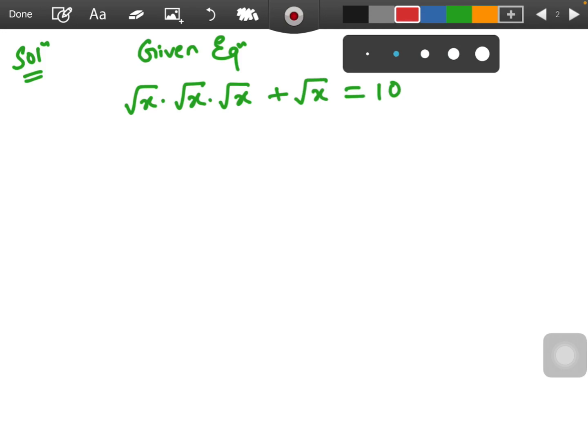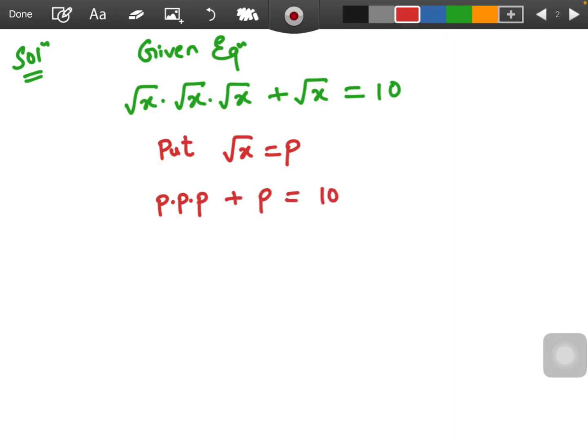Now what we are doing is suppose we are putting that put root x equals to p. You can take any alphabet m, n, y other than x. So I have taken p. So wherever there is root x now I am putting p. So this will be p times p times p plus p equals to 10. Very simple.